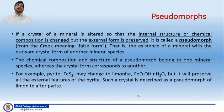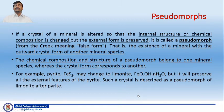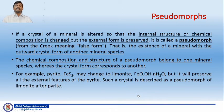A good example is pyrite, having a composition of FeS₂. It may change into limonite, the composition of which is FeO·OH·nH₂O, but it will preserve all external features of the pyrite. Limonite is an oxide of iron formed by the alteration of pyrite. Such a crystal is described as a pseudomorph of limonite after pyrite, because the mineral limonite is formed from the original mineral called pyrite.